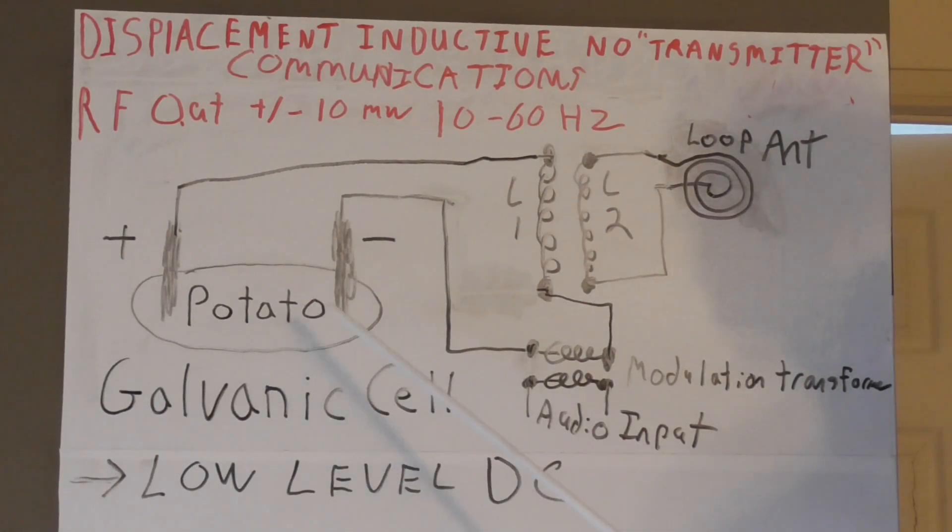It's a low level DC voltage, so in this example I use a potato battery. You've got your plus and your negative going into the L1 coil here, going down into a coupling transformer which is our modulation transformer for audio input. This will modulate our loop, and this is the L2 that couples into the L1. This is where the RF comes out, and this would be the L3 loop.